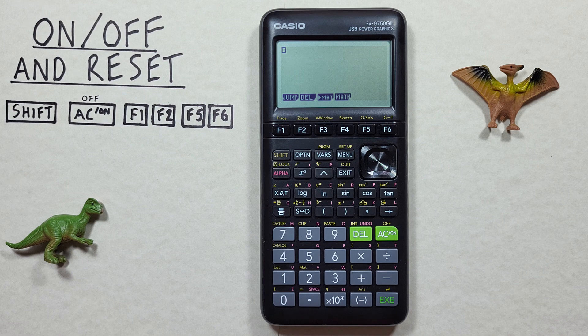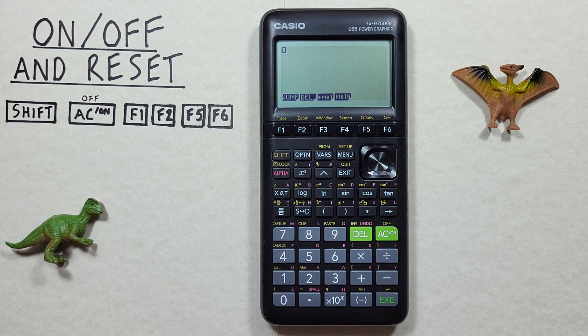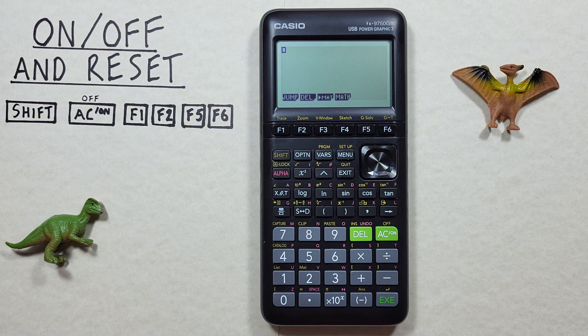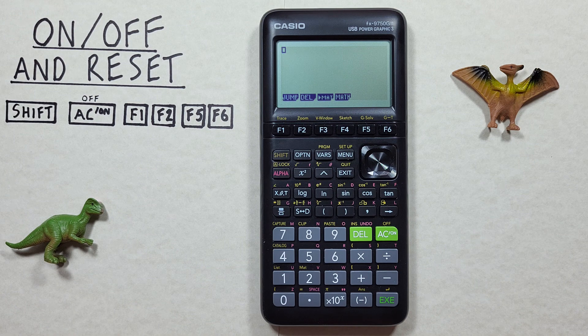If we're using our calculator and all of a sudden it starts giving us weird results, it might be set to the wrong kind of setting. If we don't know what this is specifically, we can reset our calculator to its default settings.